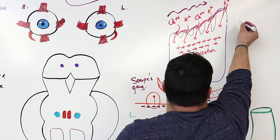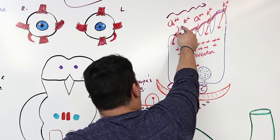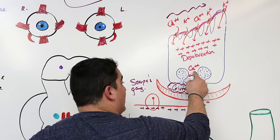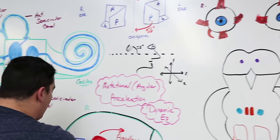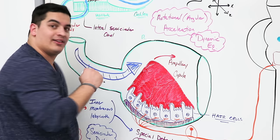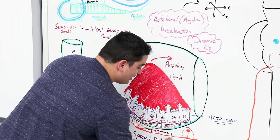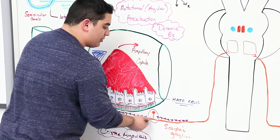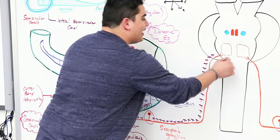What if the stereocilia beat away from the kinocilium? The tip links would relax, the channels would close. Calcium and potassium can't come in, so the cell won't depolarize — it will actually hyperpolarize. If it hyperpolarizes, it won't stimulate exocytosis of glutamate, and no action potentials are generated.